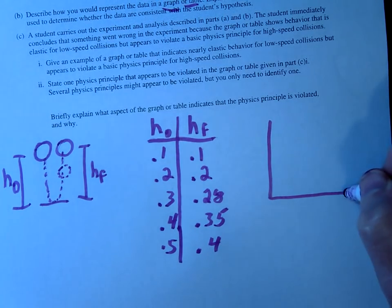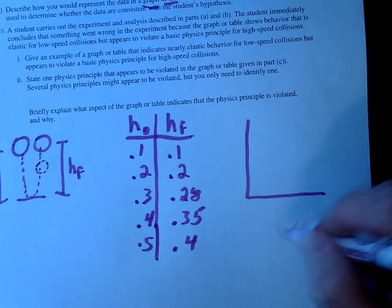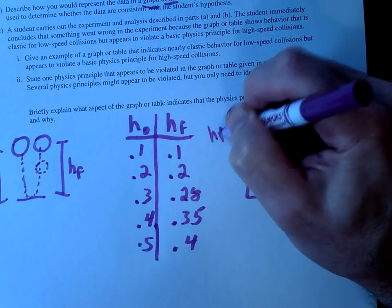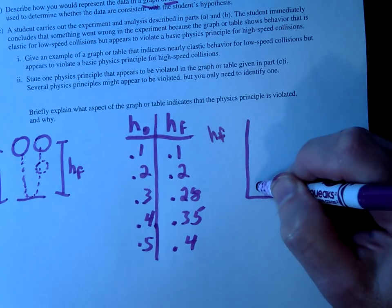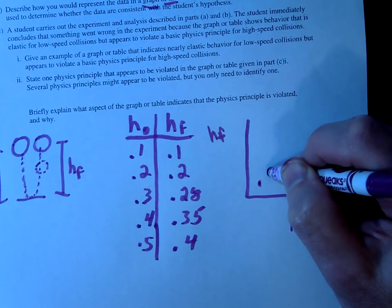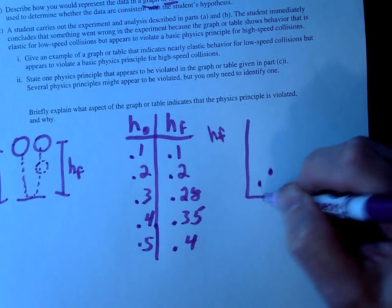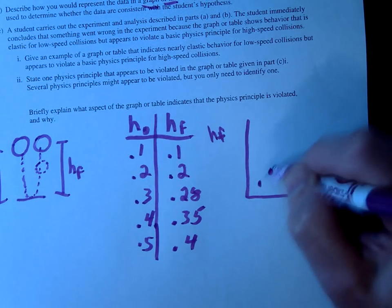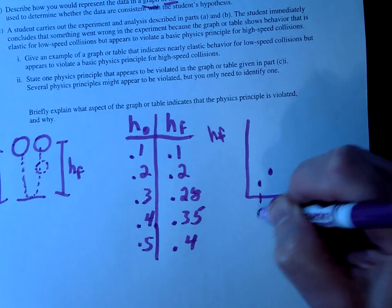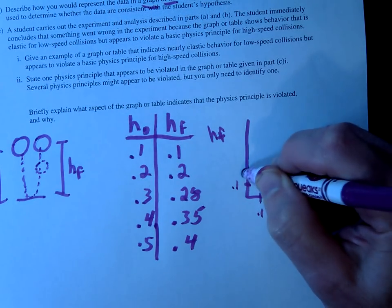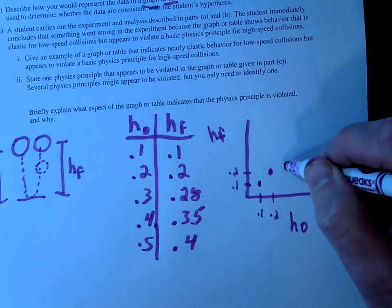So how would you graph this? And I don't think you have to do both of these, but if you were to graph these, you'd have your h_0, you'd have your h_F. And what you would end up with would be for small velocities, or small heights, you end up with the same exact height. This would be 0.1, this would be 0.1, this would be 0.2, this would be 0.2, and then it starts to deviate.